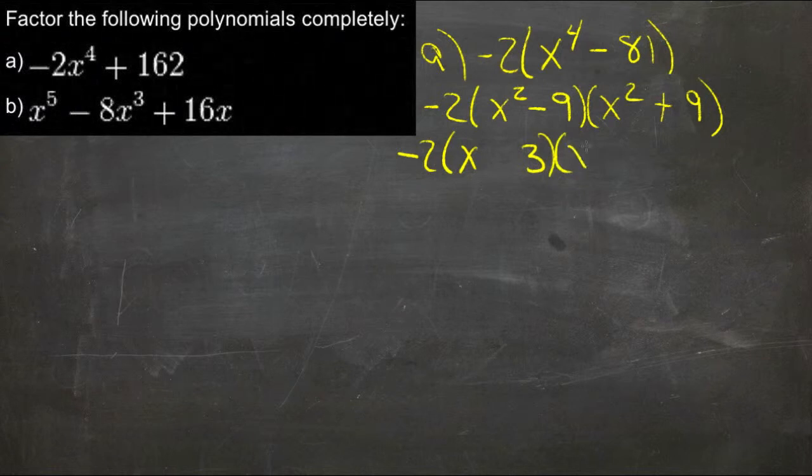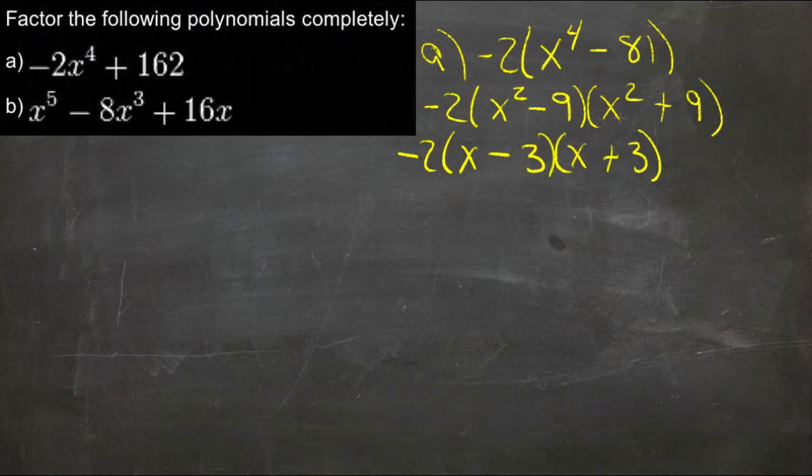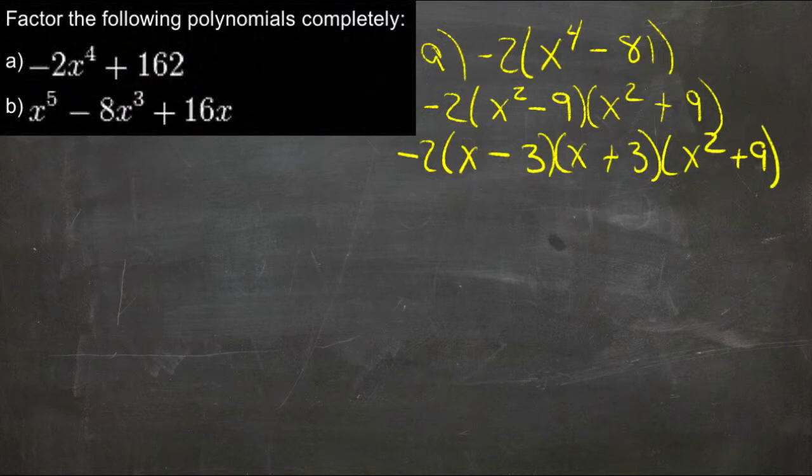so we'll write that one twice, x and 3, plus in between one, minus in between the other, and we still have our x squared plus 9 out here on the end. So now that one's fully factored.